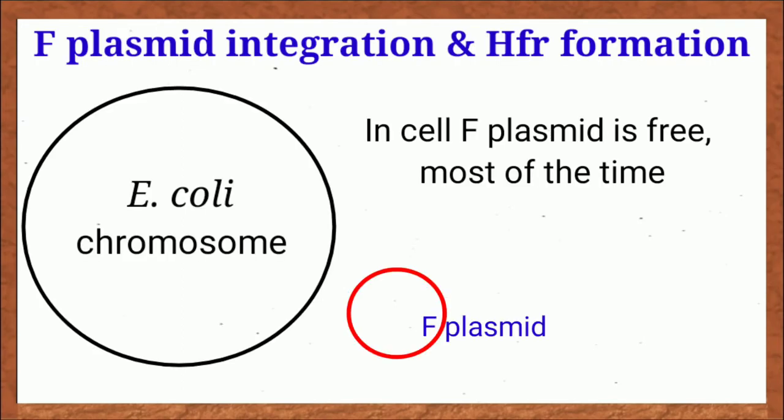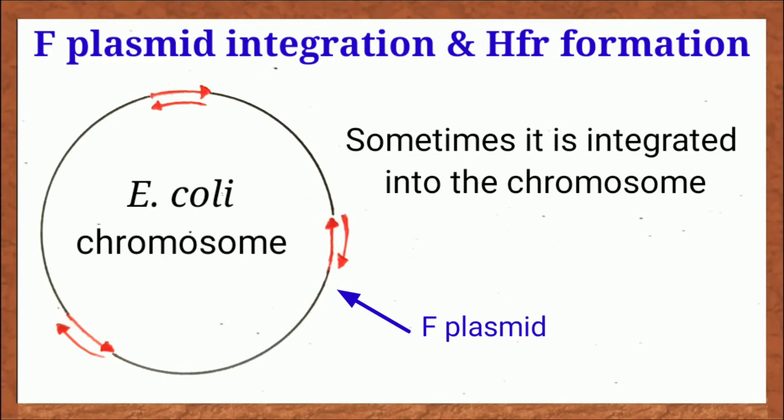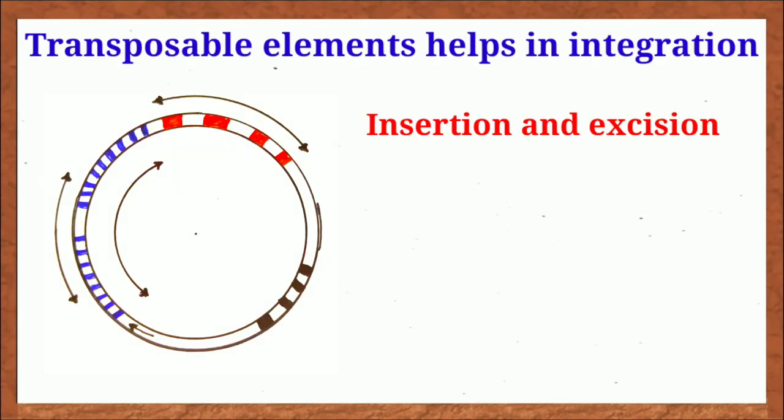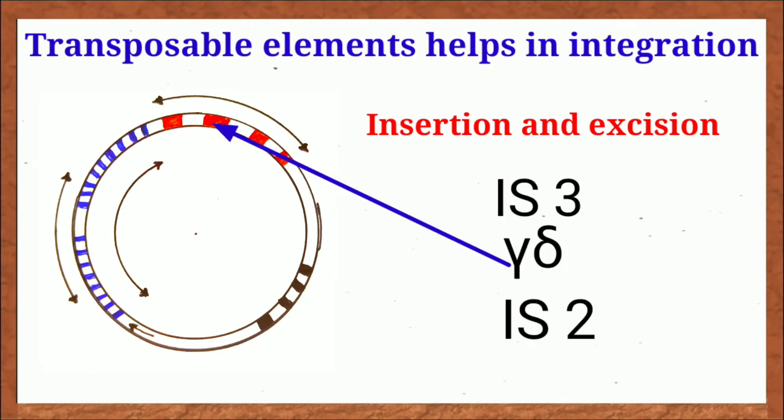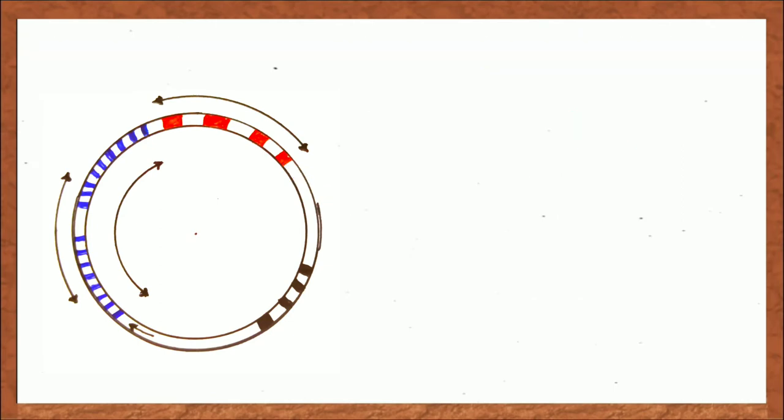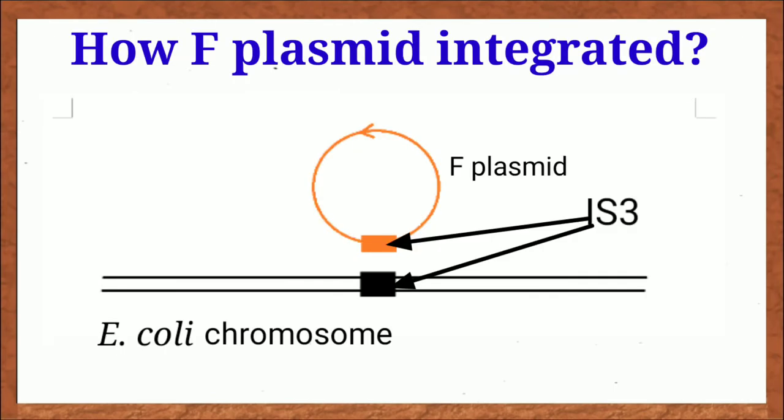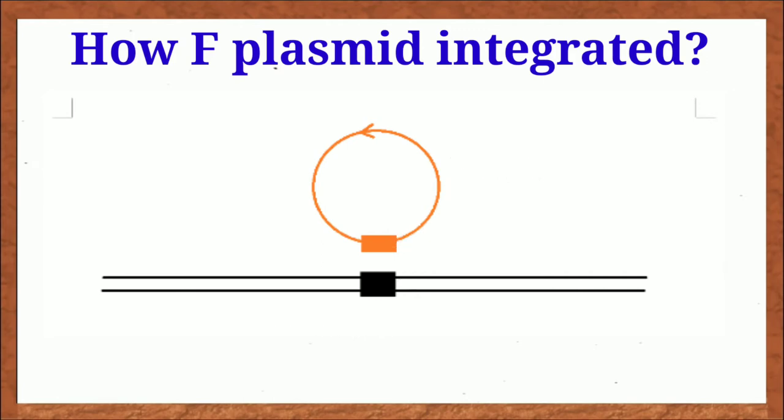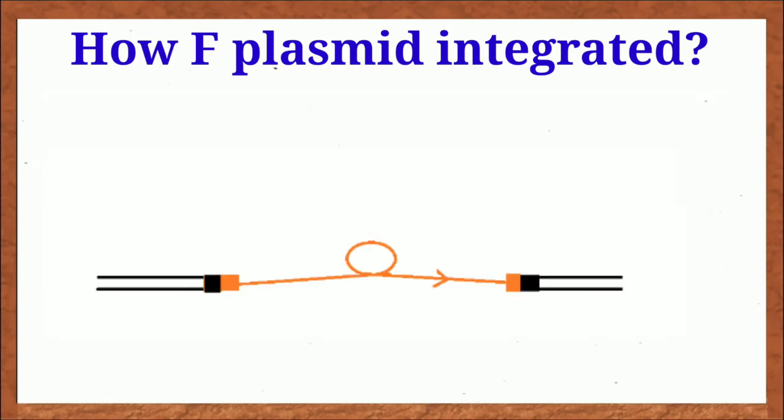Most of the cases, F plasmid is free, but sometimes it is integrated into the chromosome. There are three transposable elements present in this region, two copies of IS3 and one copy each of gamma delta and IS2. If same IS elements present in the bacterial chromosome, it is integrated in this way.